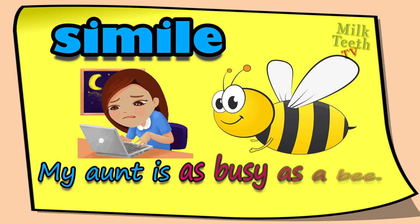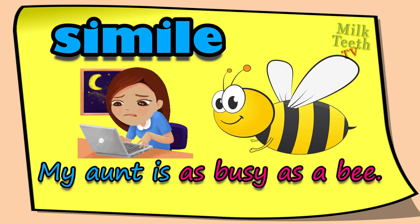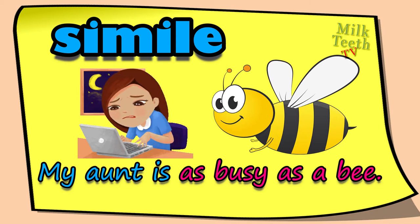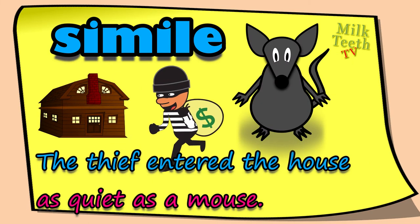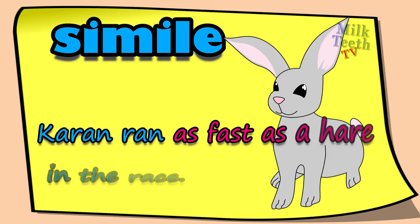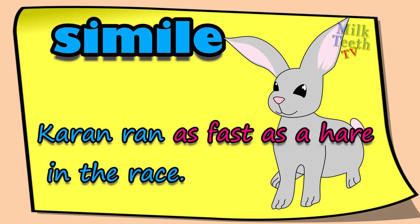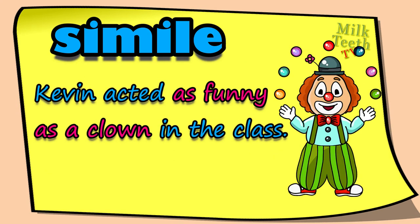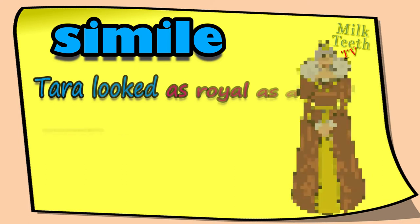Now let us learn about commonly used similes in our everyday lives. 'My aunt is as busy as a bee' — simile: as busy as a bee. 'The thief entered the house as quiet as a mouse.' 'Karen ran as fast as a hare in the race' — simile: as fast as a hare.